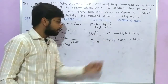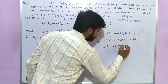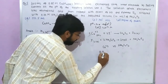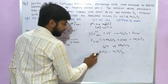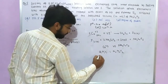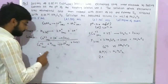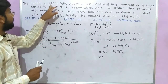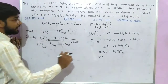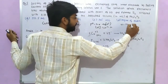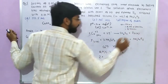For the titration calculation, we use the formula: n₁V₁ = n₂V₂. First, calculate moles of copper sulfate: molarity × volume = 0.05 molar × 100 mL = 5 millimoles of CuSO₄. So initially, the copper sulfate solution had 5 millimoles of Cu²⁺.